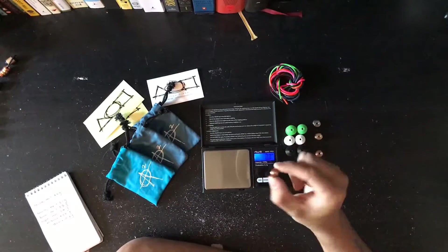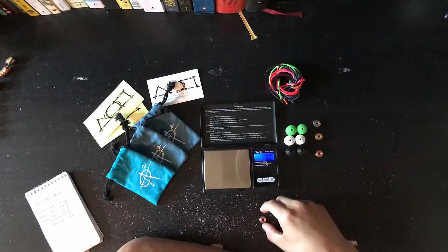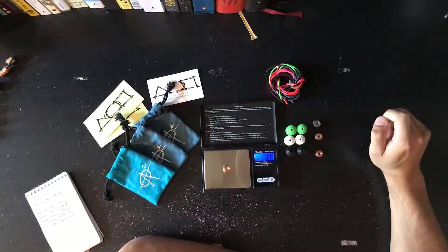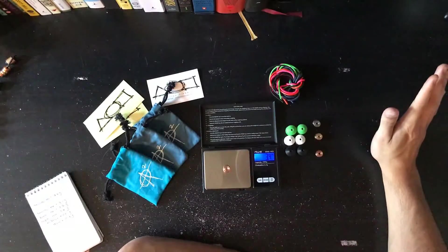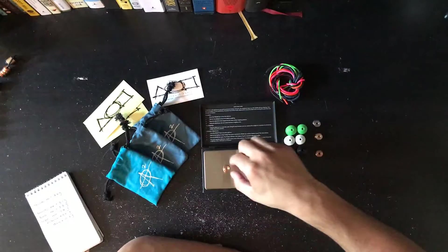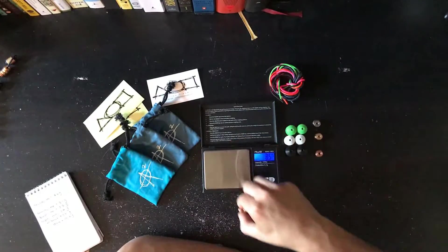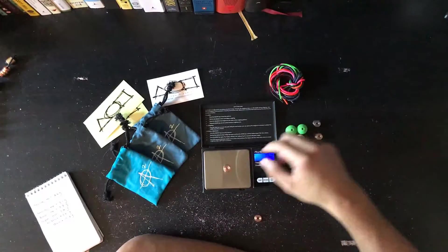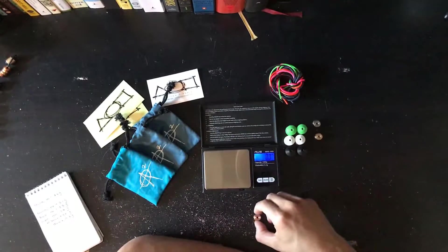So the first one we're gonna test, this little copper microhydra. 3.4 grams. That is dead on, that is exactly what the description on the AroundSquare website says. 3.4, yep, dead on both of them.